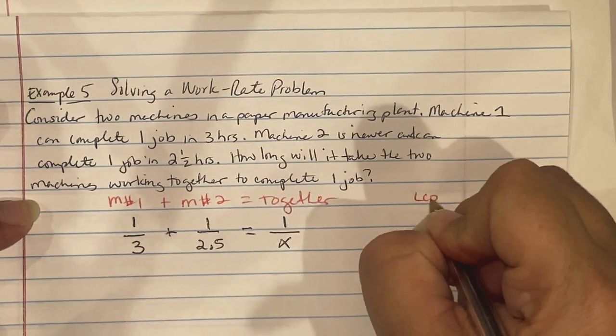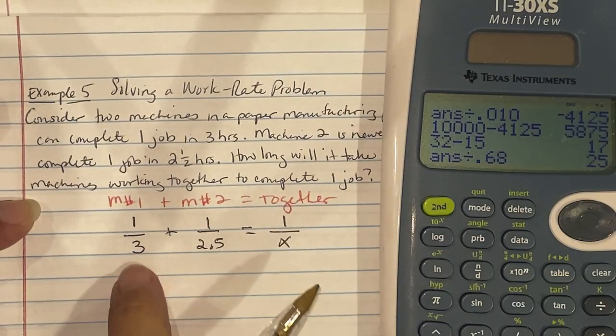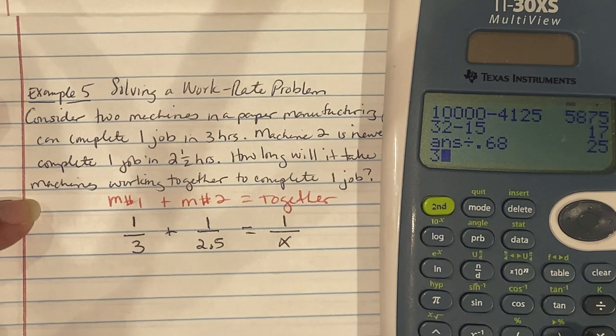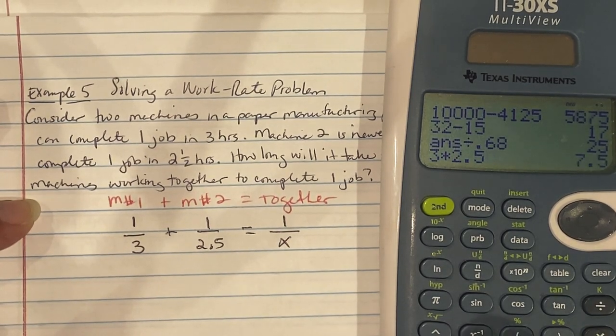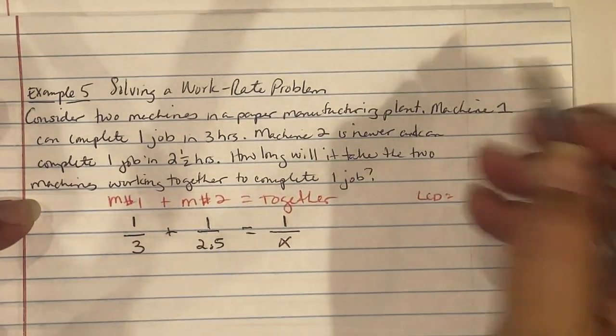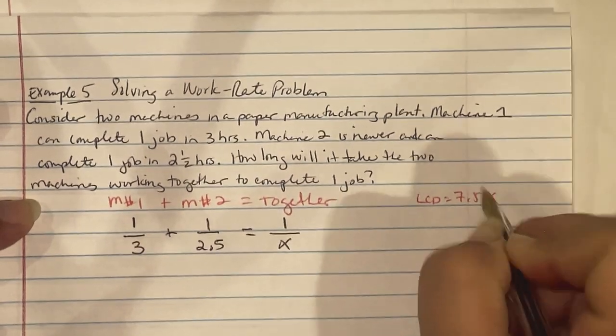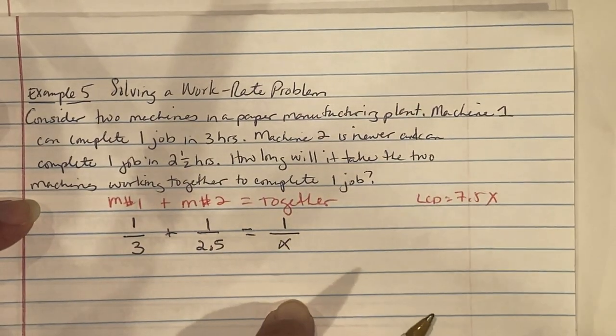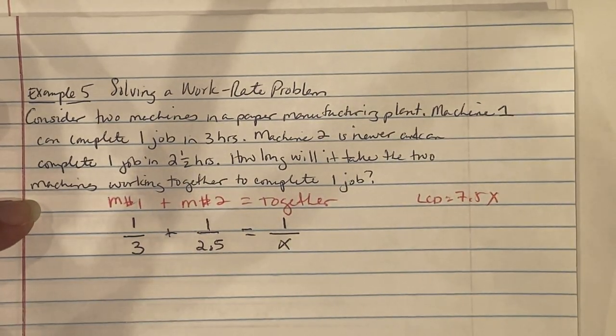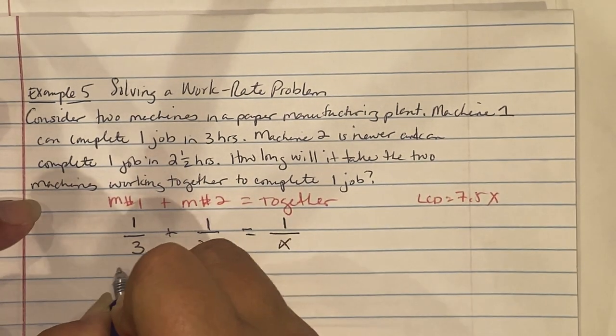So 3 times 2.5 is 7.5. So we're at 7.5 with an X because I need one of every type. So we're multiplying every single piece by 7.5X.